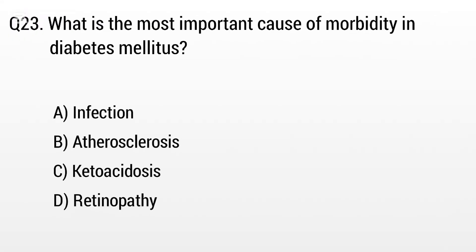Question 23. What is the most important cause of morbidity in diabetes mellitus? The right answer is Option B: Atherosclerosis.